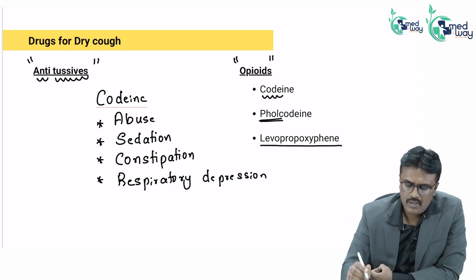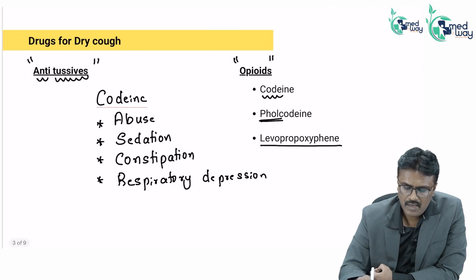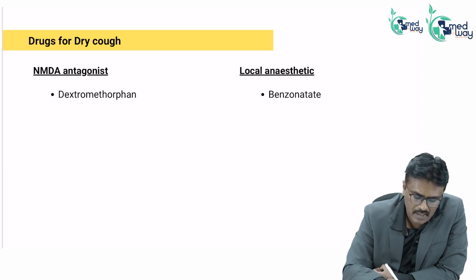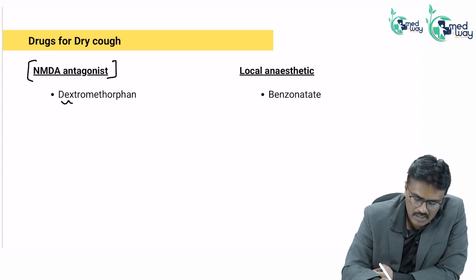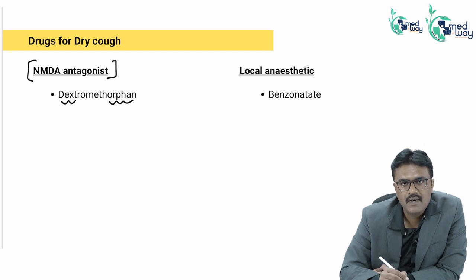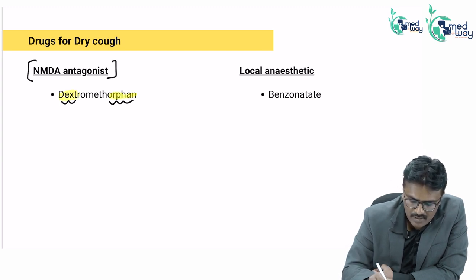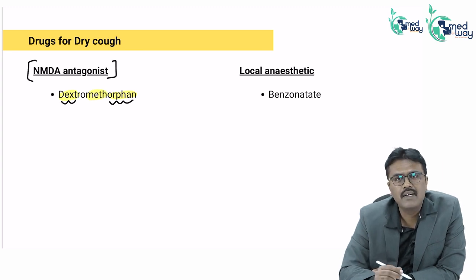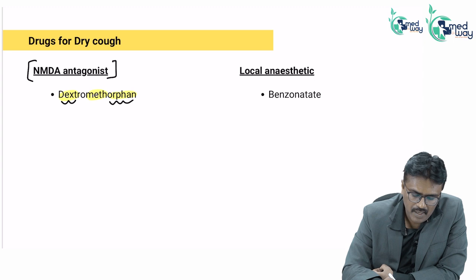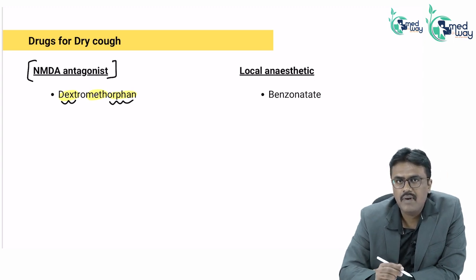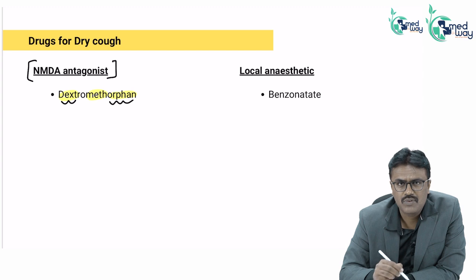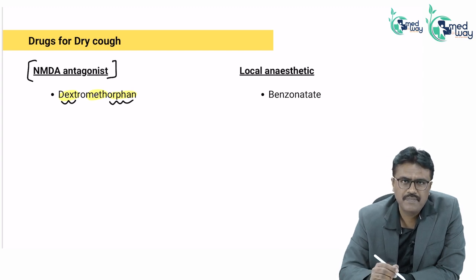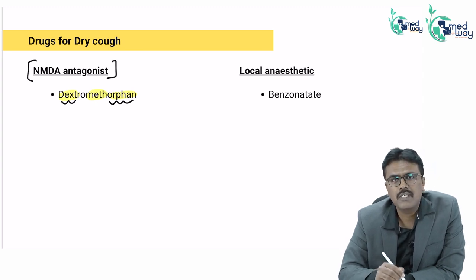Because of codeine's drawbacks, a new group of drugs was developed for dry cough called NMDA antagonists. The drug name is dextromethorphan. The main mechanism is NMDA antagonism. The difference from codeine is that dextromethorphan has less abuse or no abuse at all, less sedation, and it does not produce constipation or respiratory depression.